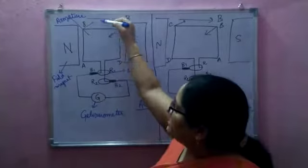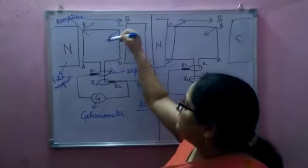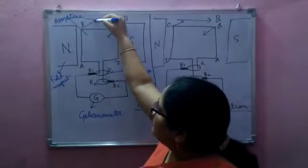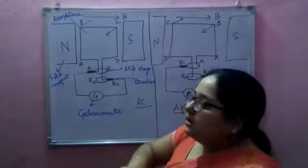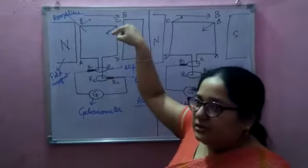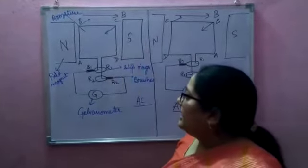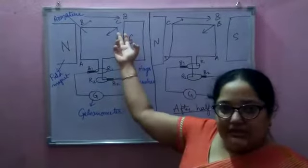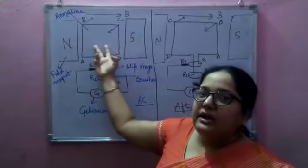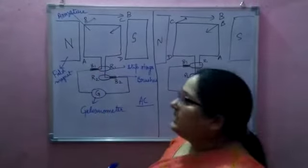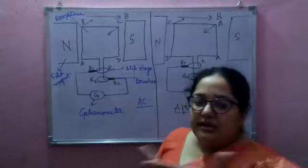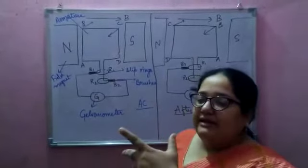Suppose we are rotating this coil in the magnetic field. This side is moving inward and this side will move outward, so that means it is rotating in the clockwise direction. The flux linked with the coil will change, and due to the change in flux a current will be induced in it. The direction of induced current can be found using Fleming's right-hand rule.